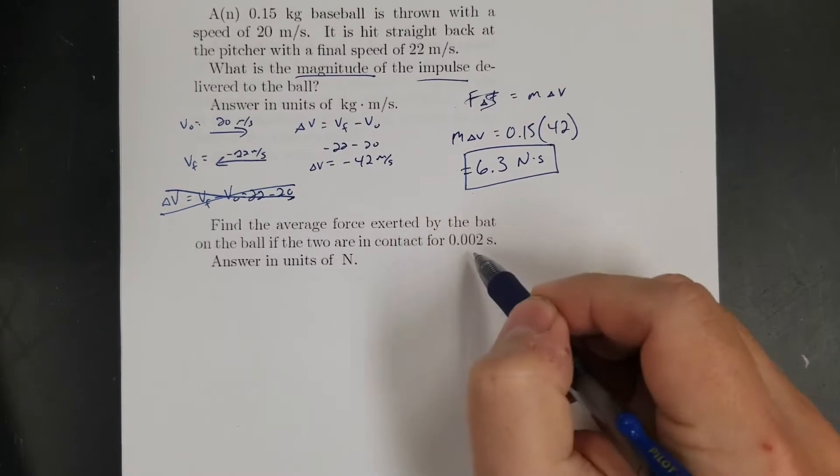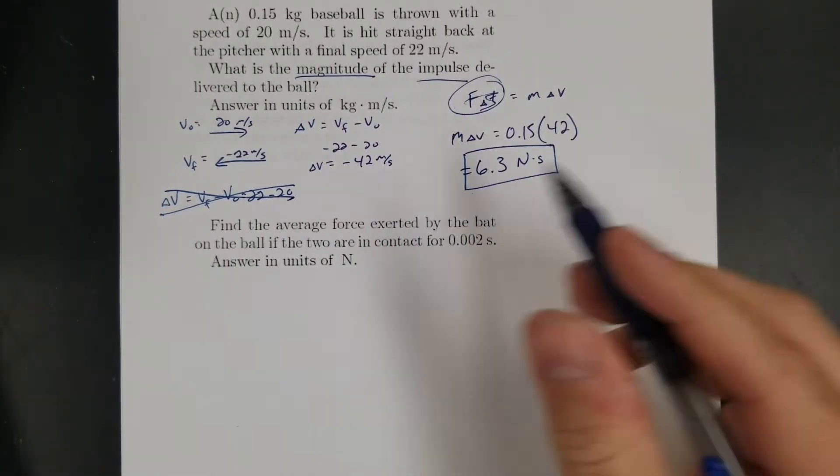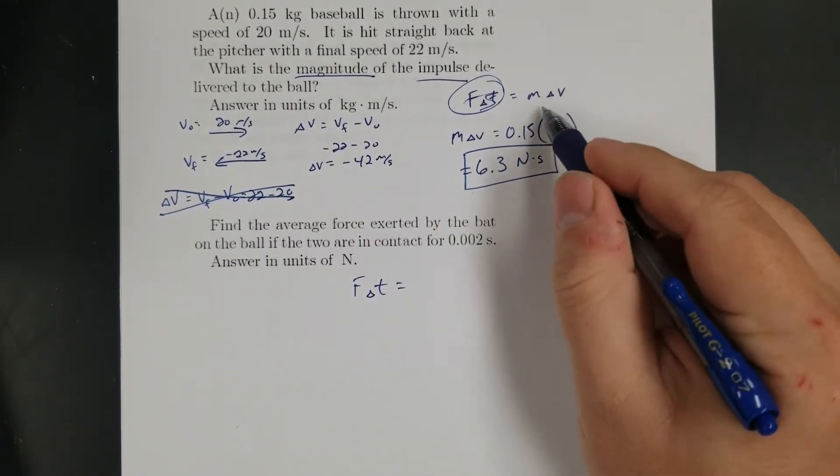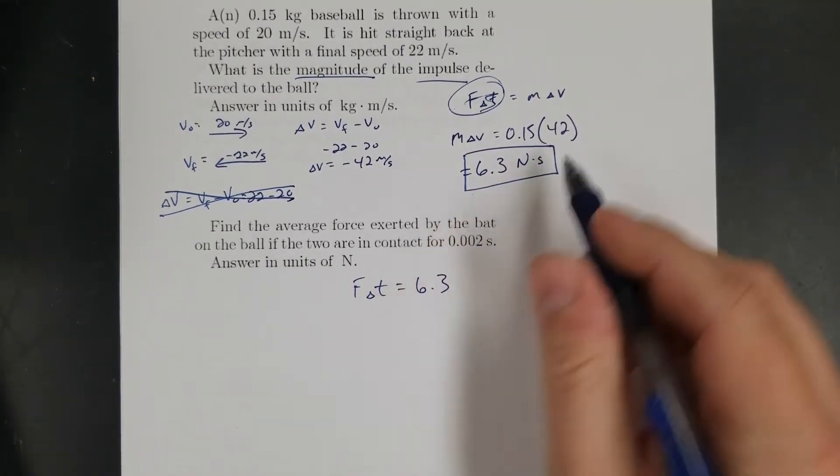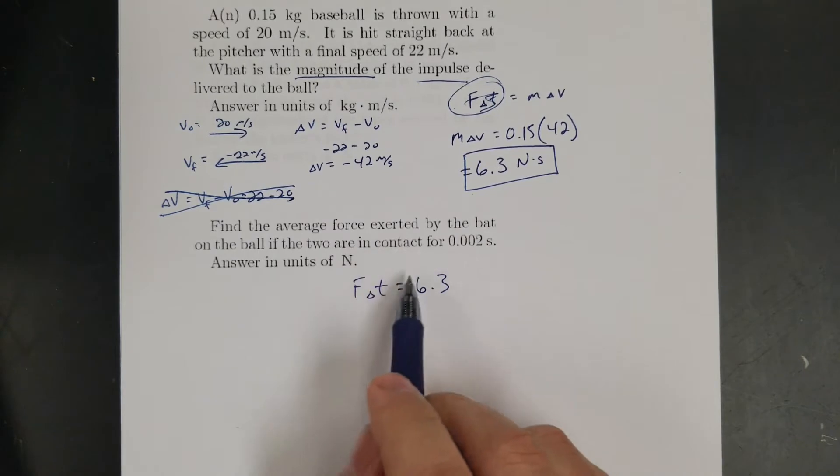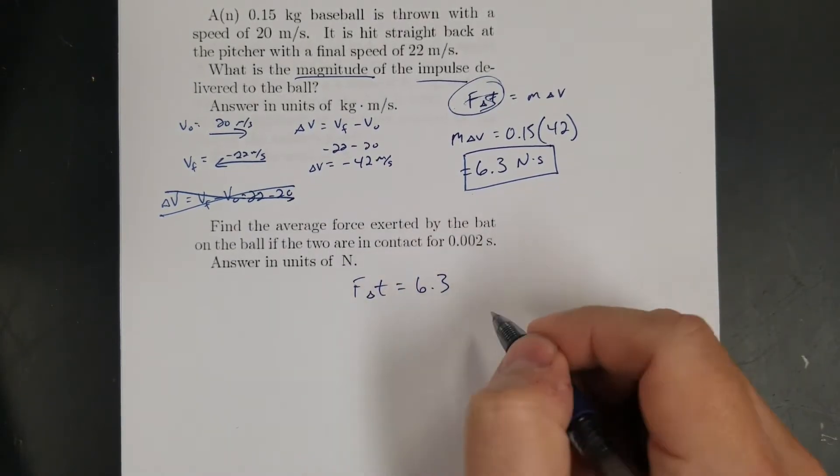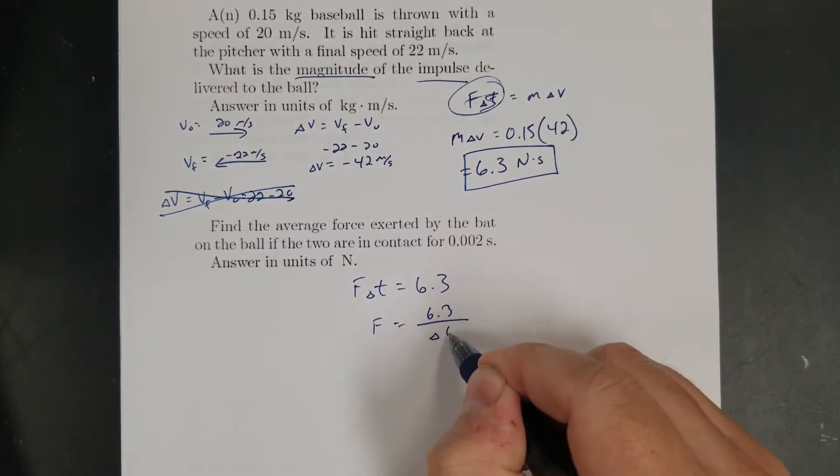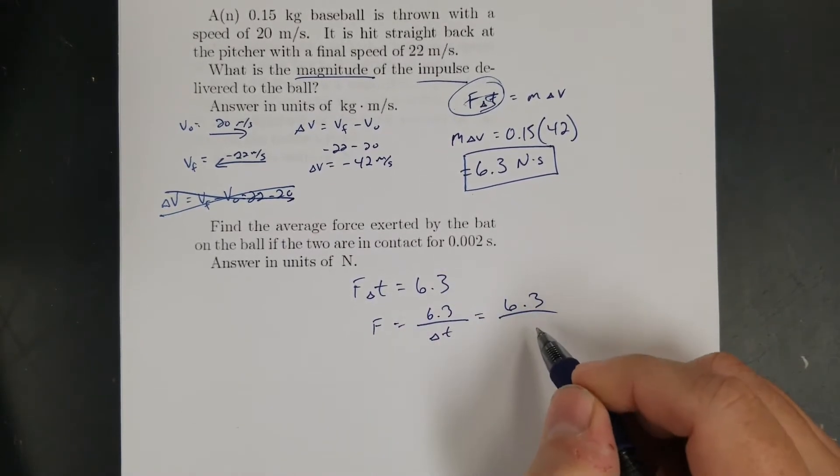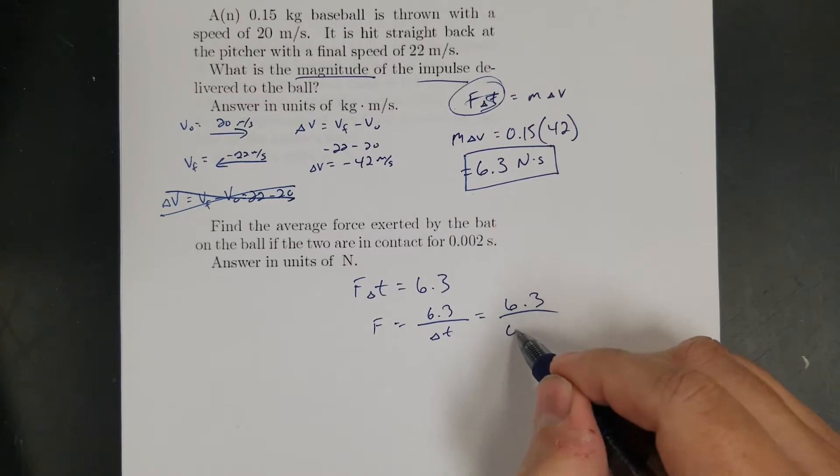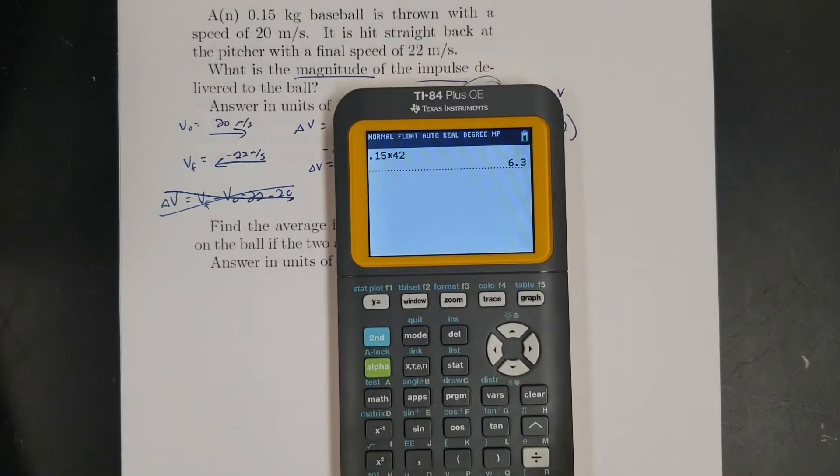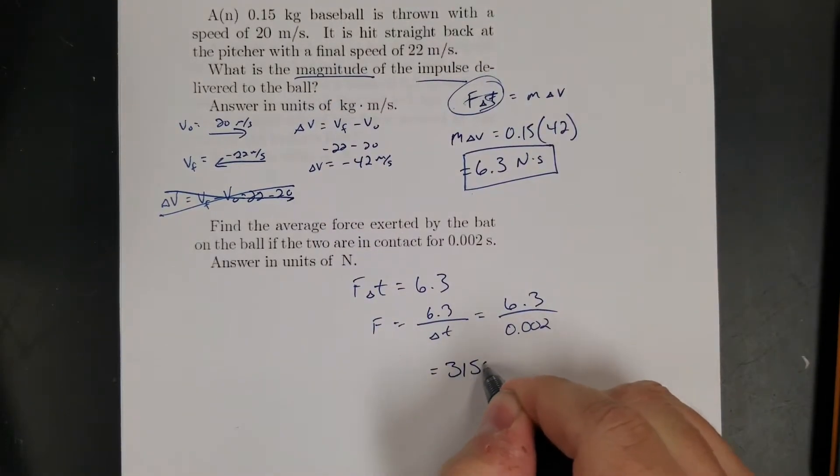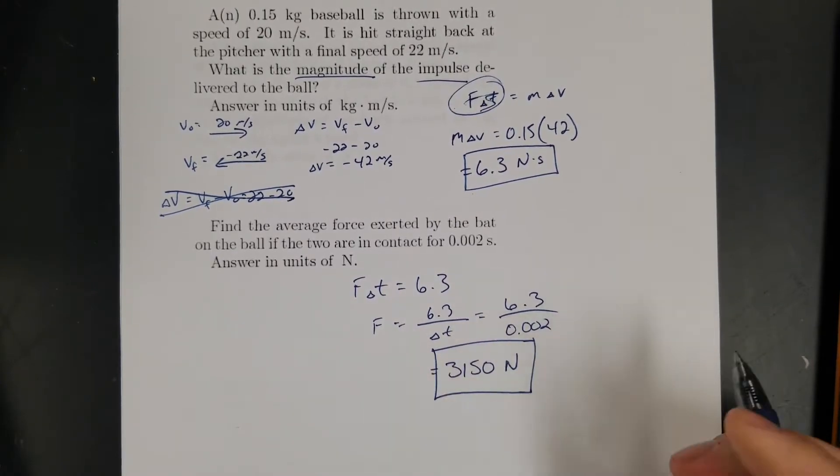Okay, so find the average force exerted by the bat. Okay, now I can use this part, all right? So F delta t equals my change in momentum, which is my impulse, which was 6.3 from the problem before, right? So now 0.02 seconds, that's the time. I want the force. So force is 6.3, which is the answer from up there, divided by the time. So 6.3 divided by 0.002 gives me 3,150. There's my force.